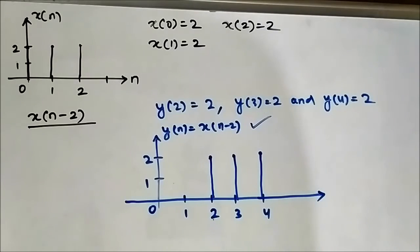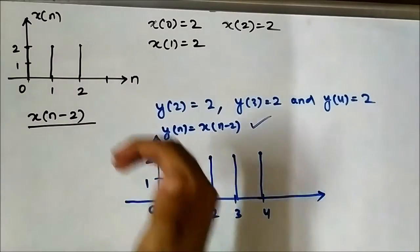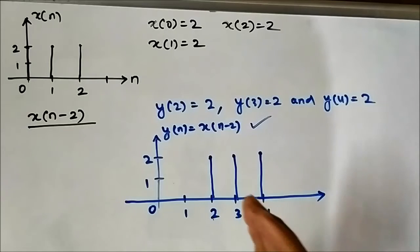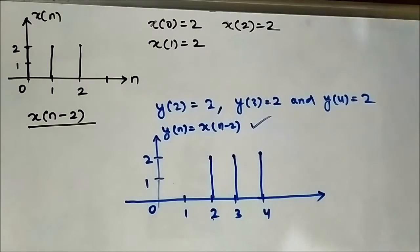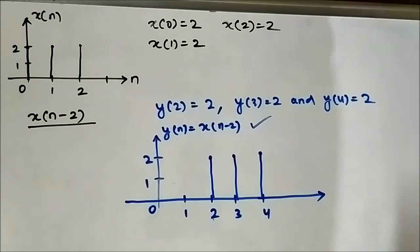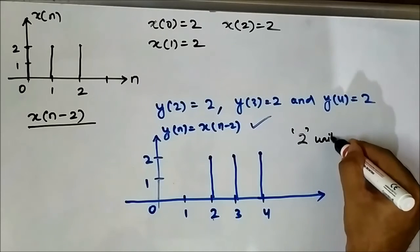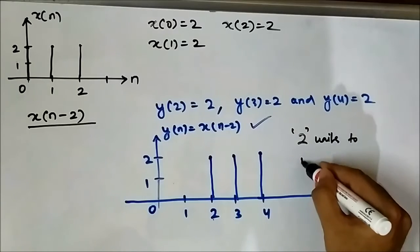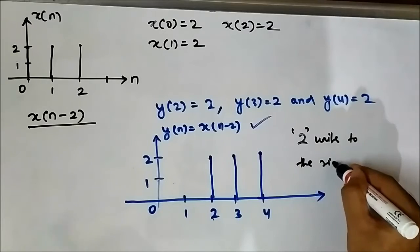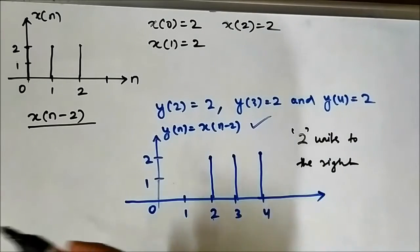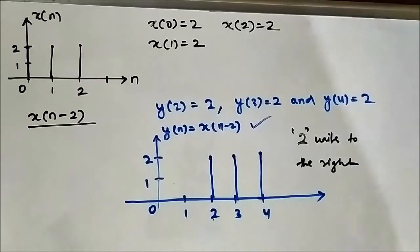Similarly, if we perform the other shifting, x[n + 2], then the signal will shift by two units to the left, as opposed to x[n − 2] which shifted two units to the right.